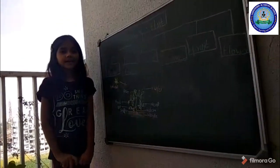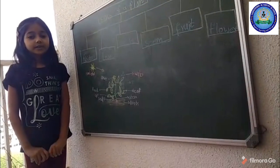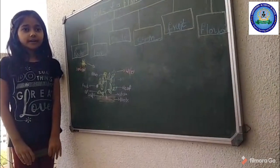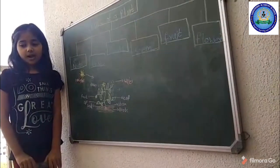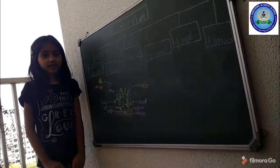Climbers are pea plant, grapevine and money plant. Creepers are gourd, pumpkin and watermelon. The plants grow with the help of sunlight,